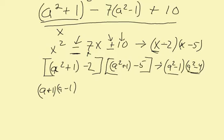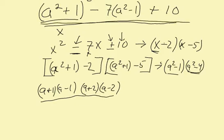a squared minus 4 is also a difference of squares, which becomes a plus 2, a minus 2. And now you can see I have completely factored this seemingly complicated problem into a relatively simple answer.